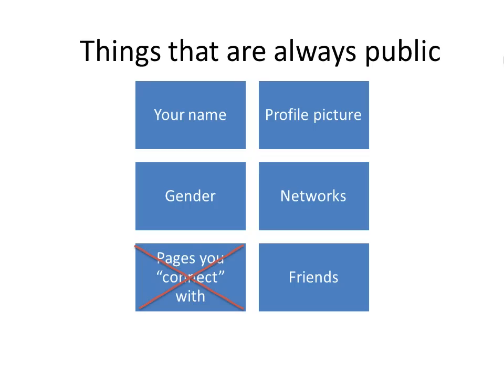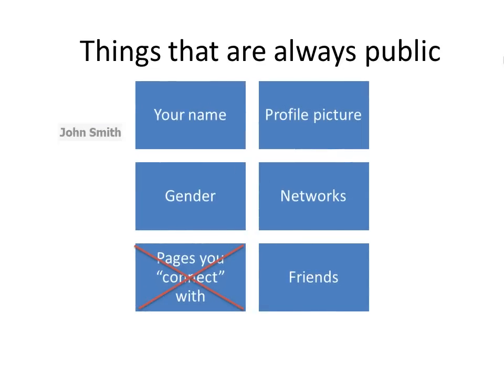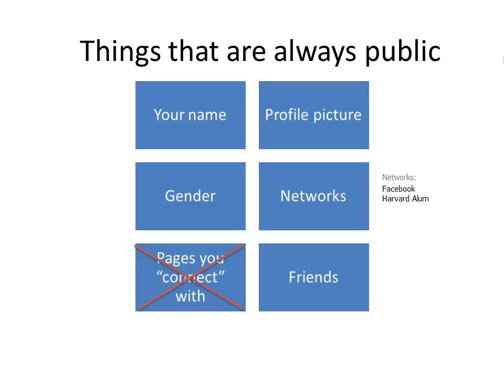Facebook has decided that there are certain things that are always public, but not as much as used to be the case. Your name does have to be public. Your profile picture has to be public too, but you don't have to have a profile picture if you don't want one. You do have to disclose your gender and any networks you belong to, but you don't have to belong to any networks.